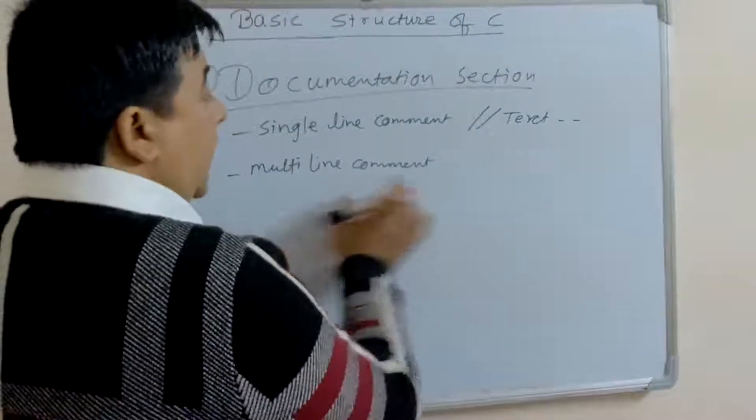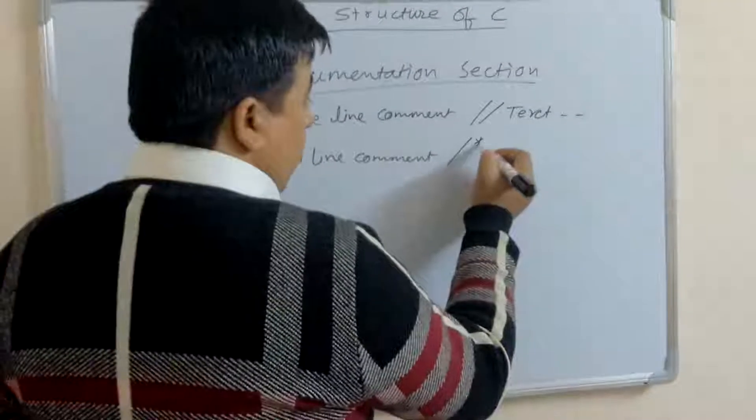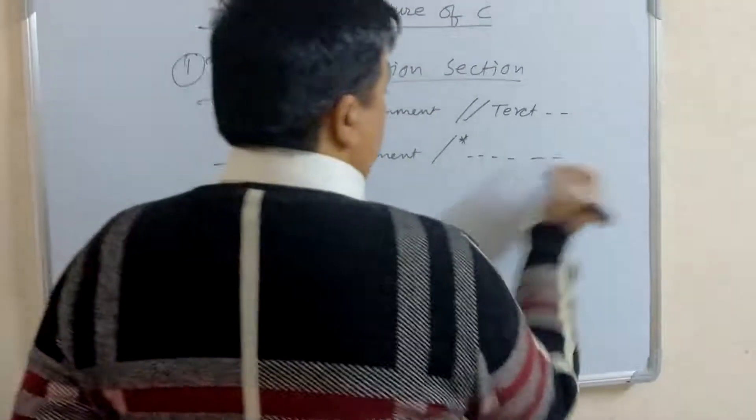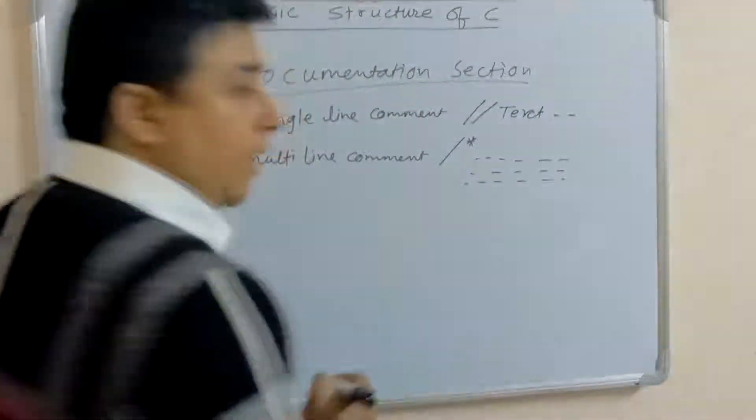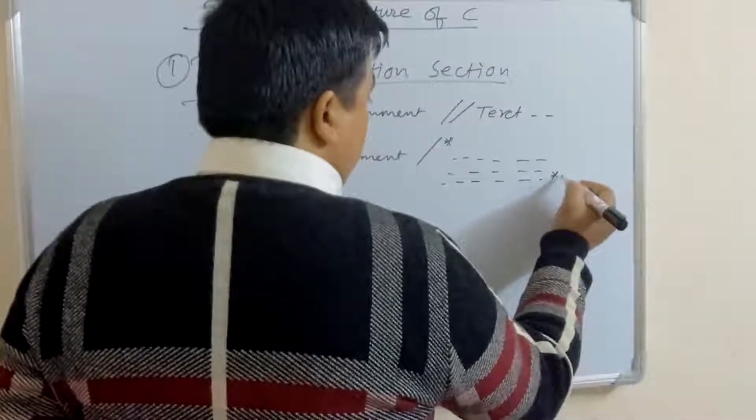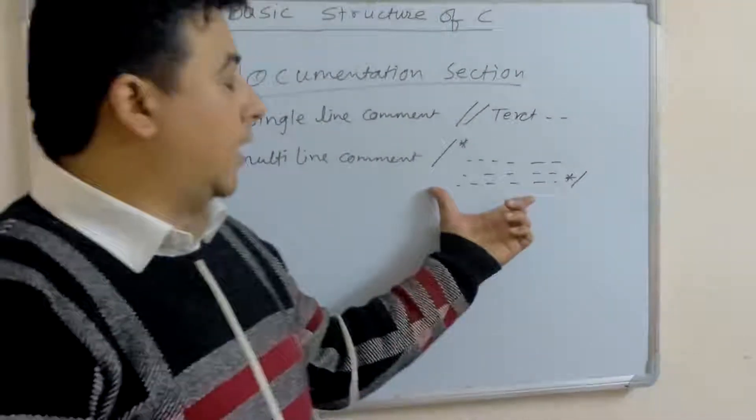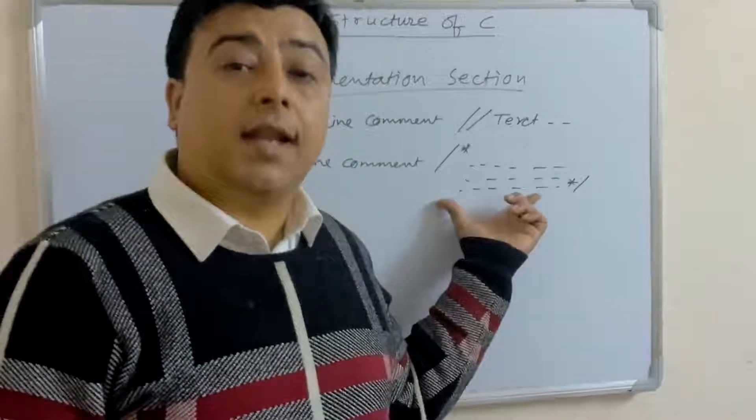And multi-line comment, it starts with forward slash with asterisk sign. We write how many lines we have to write, we write the text, and we enclose by asterisk with forward slash sign. This is used for multi-line comment.